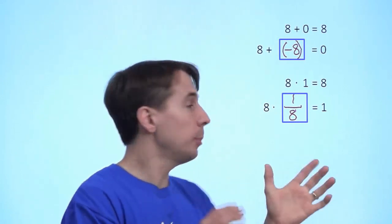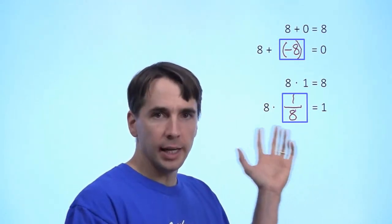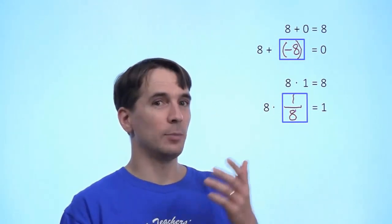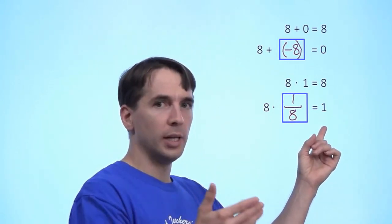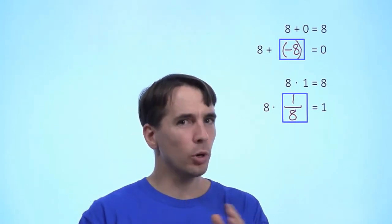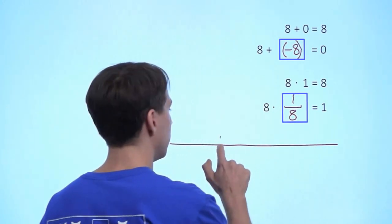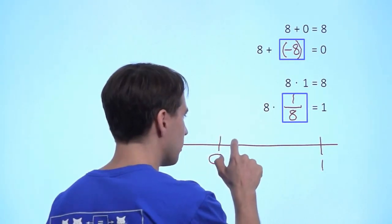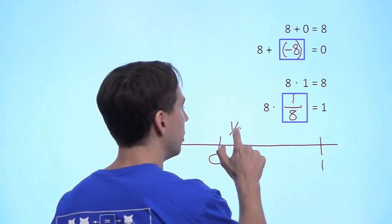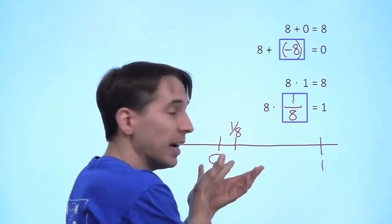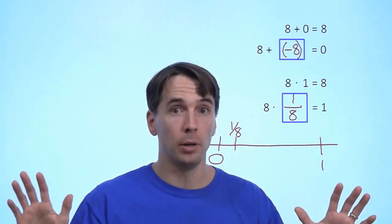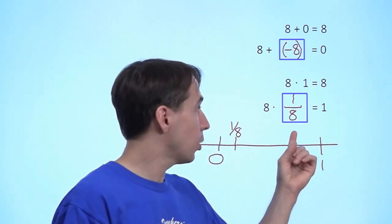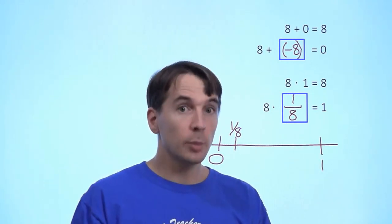1 over 8 is the number that we multiply 8 by in order to get 1, and that's how we define this number. Now, how big is this number? It's obviously not negative, because multiplying 8 by a negative gives something negative. And 8 times 0 is 0, 8 times 1 is 8, so 1 is between 0 and 8. We figure this 1 over 8 number is somewhere between 0 and 1 — and it is. If you draw a number line, 1 over 8 is between 0 and 1, closer to 0. So this is a real number we can find on the number line, even though we totally made it up just to answer the question: 8 times what equals 1? And the answer is 1 over 8, the reciprocal of 8.